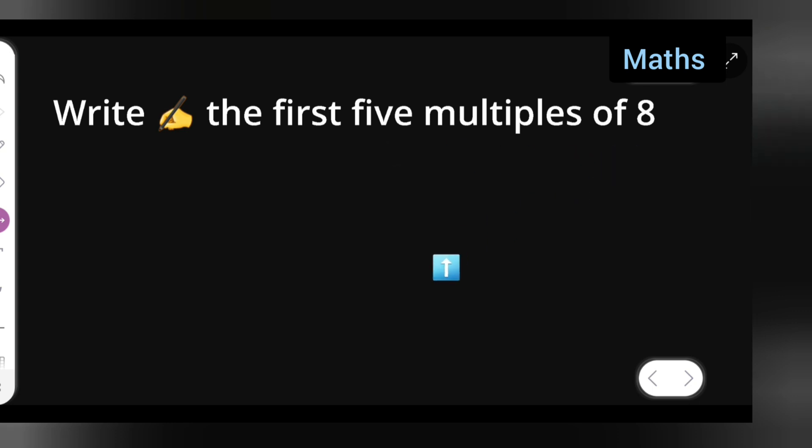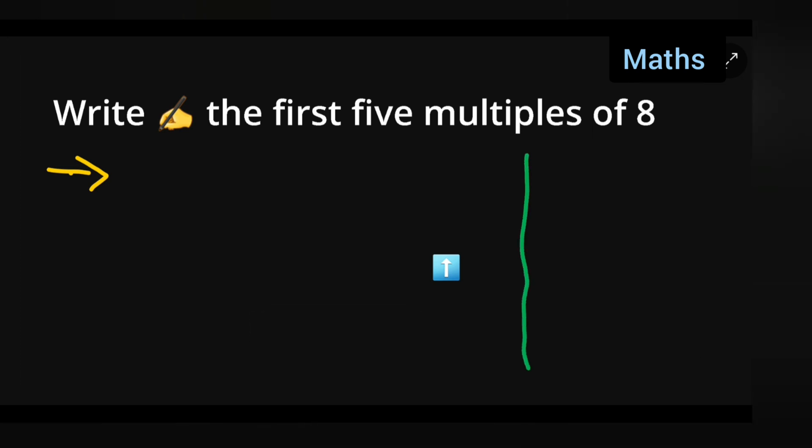What do you mean by the first five multiples of 8? It will be denoting the table of 8, right? For example, this is a rough column, okay? So it will be 8 ones are 8...